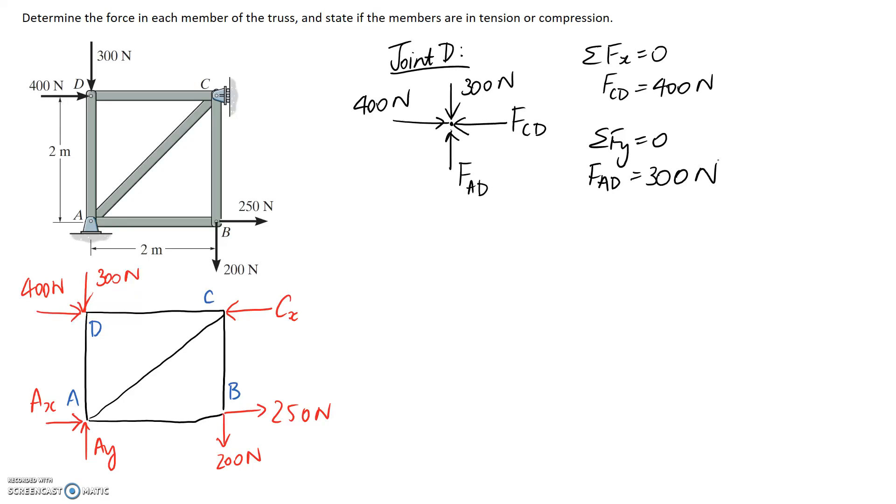Now we need to tell or report the tension or compression in each of the members. So FCD, the way we've drawn this, we've got our force pointing onto the joint. That represents a compression member. So I'll put C on the end here. We have the same case with FAD. It's pushing onto the joint so that means it's also going to be a compression member. So that's our first two answers.